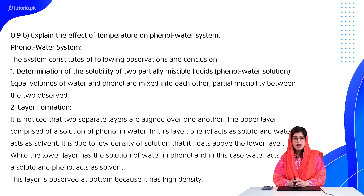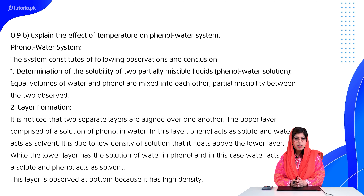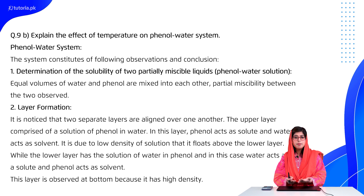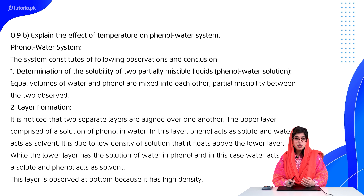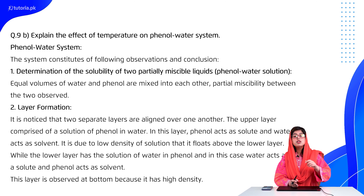Question number 9, part B: explain the effect of temperature on the phenol-water system. In this case, first define partially miscible liquids. When you discuss them, remember two to three key headings step-wise. You can remember critical solution temperature, which is the upper consolute temperature. Remember the two names. At least discuss the phenol-water system, then remember further examples at the end, and also the concept of a saturated solution.